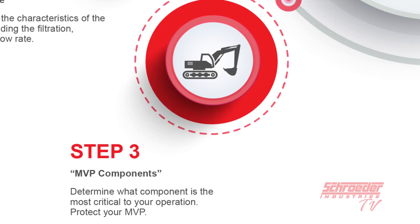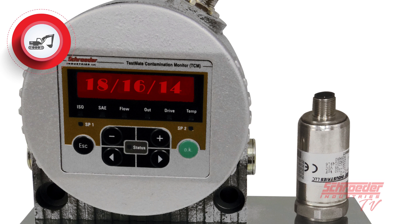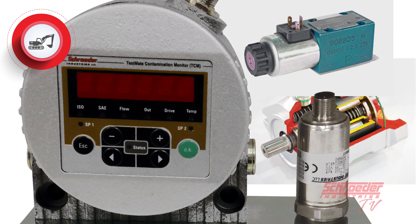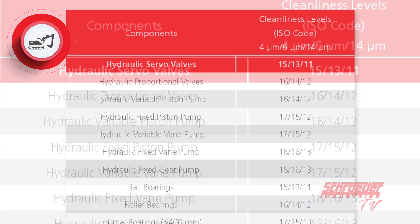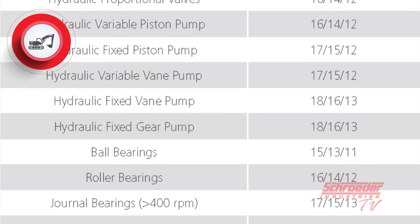Step three is to figure out what your most valuable component is — that is, what component in your system requires the lowest or cleanest ISO code reading. It never hurts to pick an ISO code that is lower than the smallest ISO code that you need. If you're unsure about what ISO code you need, think of components that are breaking down or wearing out the fastest. As a note, we have charts available for general component ISO code levels for just about any part you are looking for.